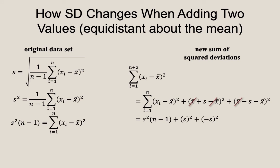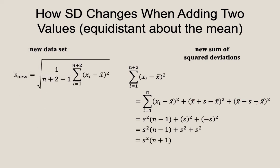Now, we note that the squared deviations for each of the new terms are negative s squared and positive s squared, both of which equal s squared. The new total sums of squared deviations is the difference n minus 1 times s squared plus s squared plus s squared, all divided by the difference n minus 1 plus 2.